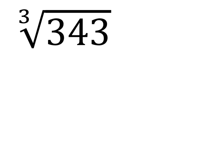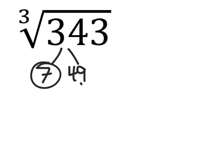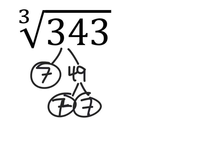Here we have the cube root of 343. 343 splits up into 7 times 49. Very good. So 49 splits up into 7 times 7.